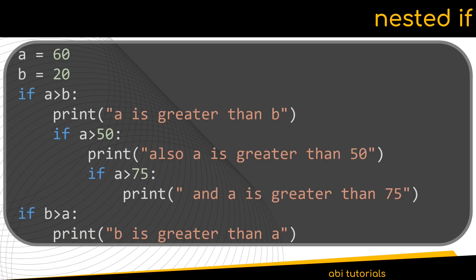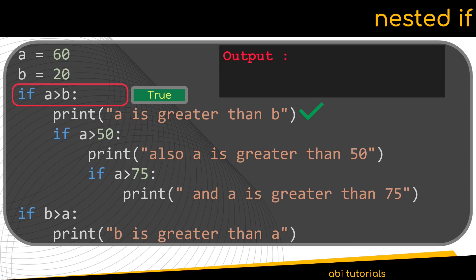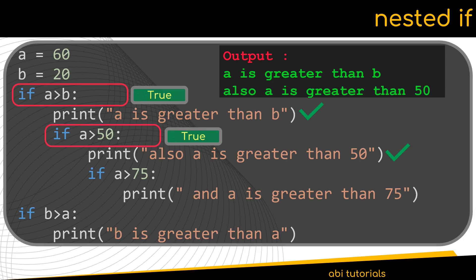The conditional statements we have seen in the previous slides can also be nested. Nesting is nothing but adding the conditionals within the block of the parent conditionals. In the example given here, we have nested the if statements as highlighted. The first if statement evaluates to true and the text 'a is greater than b' will be printed. The inner if 'a greater than 50' also evaluates to true and the corresponding statement within its block will also be printed. The final nested if will be evaluated to false and hence it won't be displayed in the output.